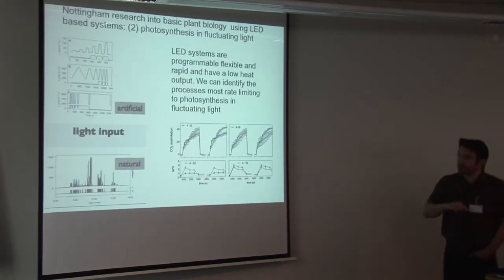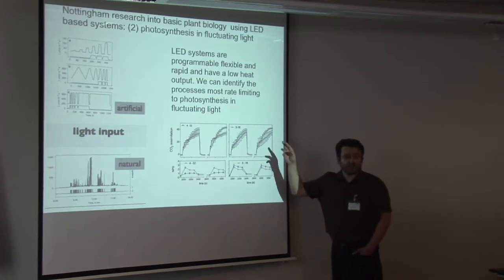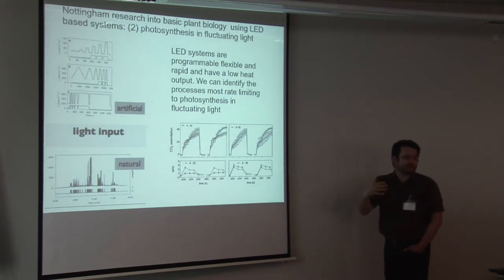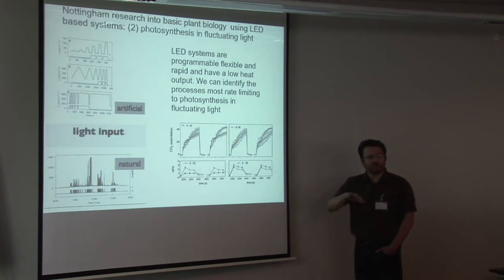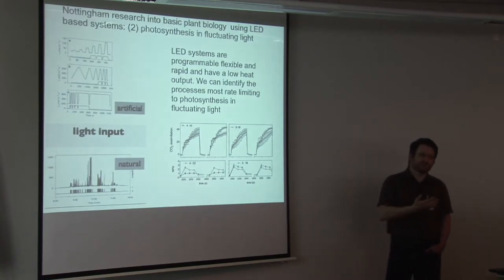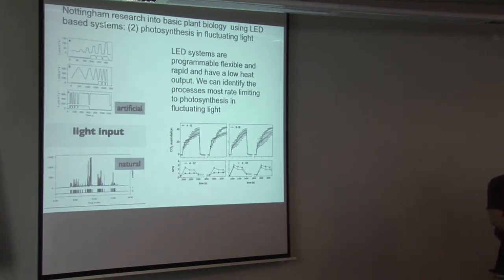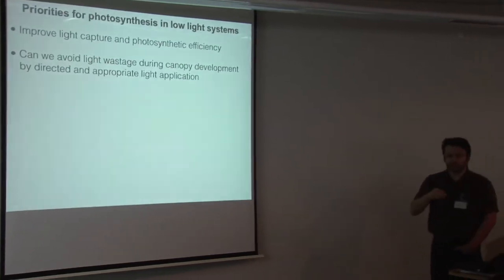The other thing we're using this cabinet for is photosynthesis in fluctuating lights. Some of my basic research concerns improving the efficiency of photosynthesis in fluctuating lights. This could be relevant in glass house systems perhaps with supplementary LED light. So photosynthesis is quite slow actually. If light changes it's usually slow to respond. So we're looking at improving the efficiency of photosynthesis in dynamic light. LEDs are great for this because you can program fluctuations.